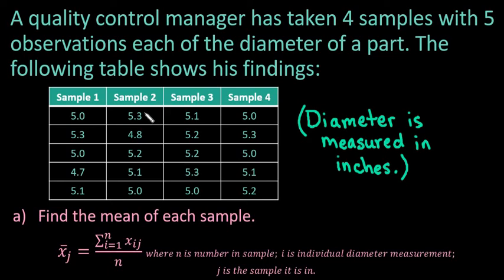For this video, what I want to do is show you how to find the mean and the standard deviation of the sampling distribution of the sample mean when a quality control specialist takes multiple samples and you're trying to come up with an estimate for the mean. A quality control manager has taken four samples with five observations each of the diameter of a specific part, and the following table shows his findings.